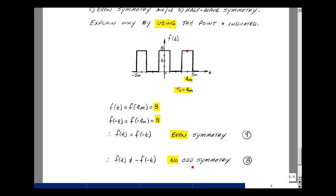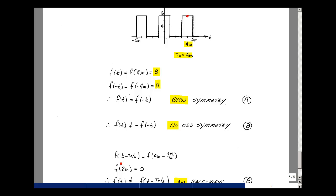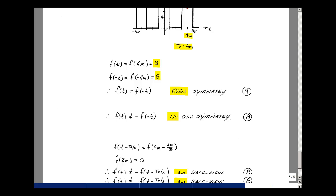Now for half wave symmetry, we need to take the term f(t - T_0/2). Period was equal to four milliseconds. We're going to divide that by two. And let's evaluate that when t is equal to four milliseconds. And so I'm going to get f(4ms - 2ms), which is f(2ms). And f(2ms) is equal to zero. f(4ms) is not the negative of f(2ms). So we don't have half wave symmetry.